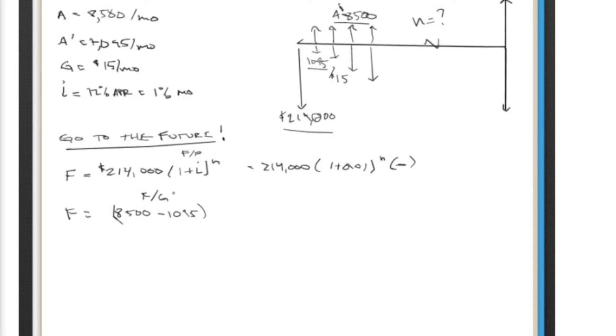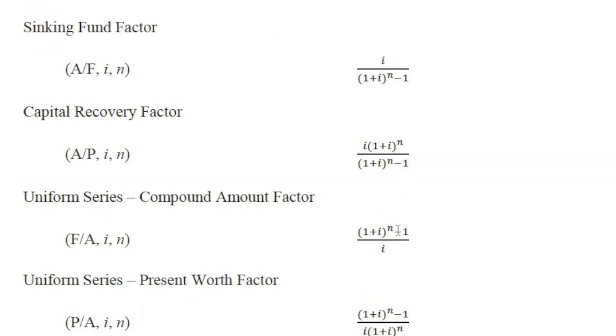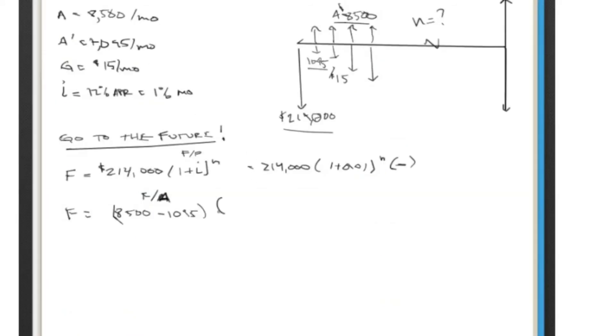So in this case it's A, F given A. This is a uniform series, so F given A. Okay. And you'll look at F given A on here towards the bottom, is right here: (1 + i) to the n minus 1 over i. So that will come out to (1 + 0.01)^n minus 1 over 0.01.